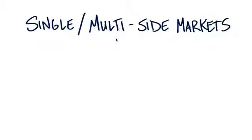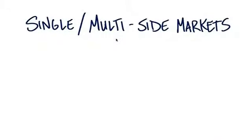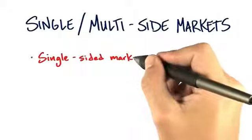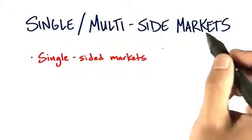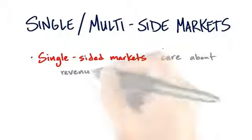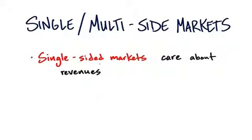One of the things I just want to re-emphasize, because we mentioned it earlier, is the difference between single-sided markets and multi-sided markets. In single-sided markets, the customer is the user and the payer. There are no separate users and no separate payers — you're the customer and you're going to pay for it.